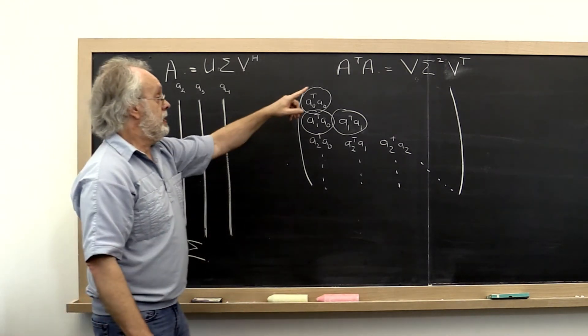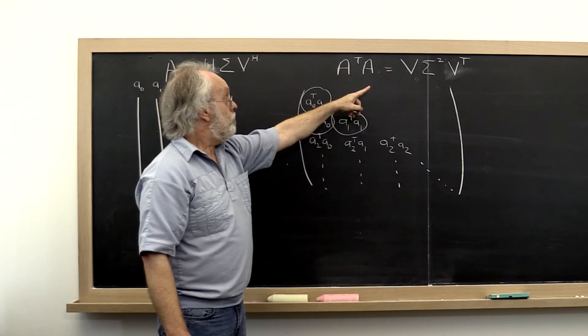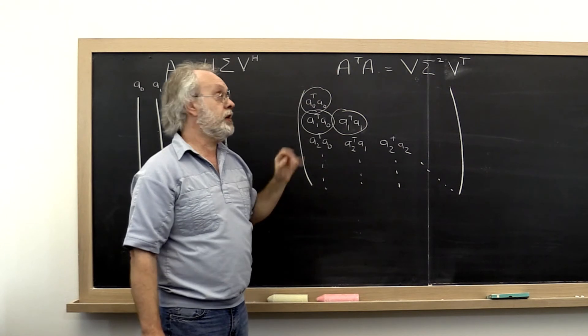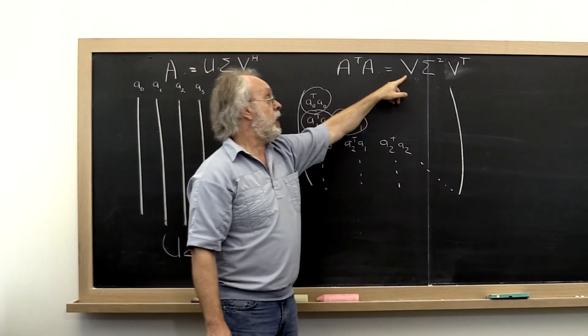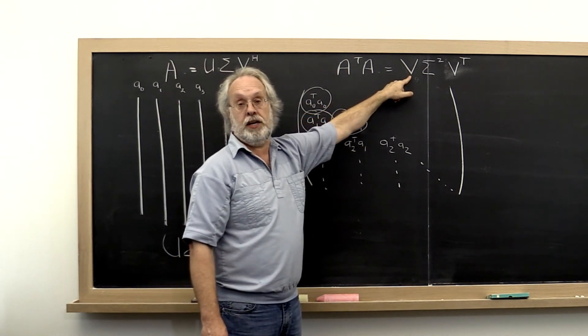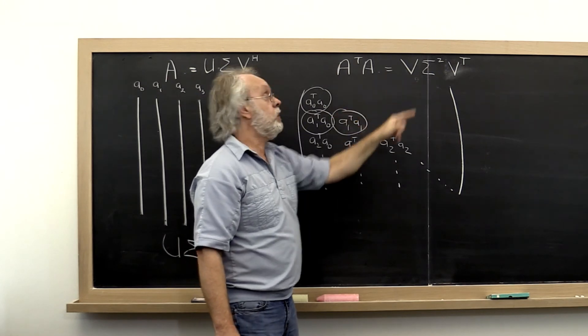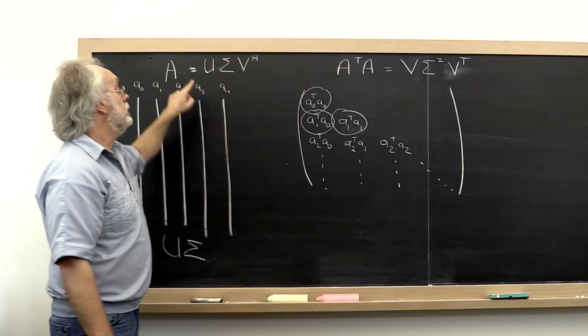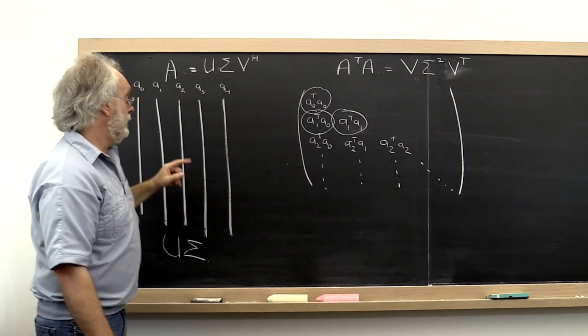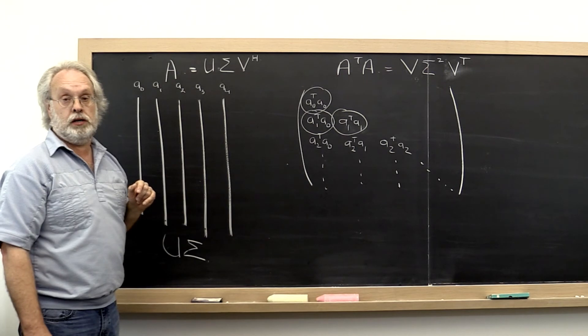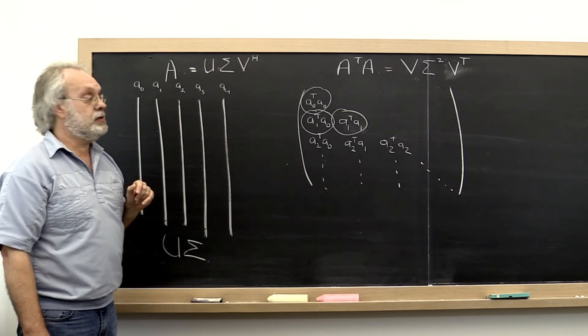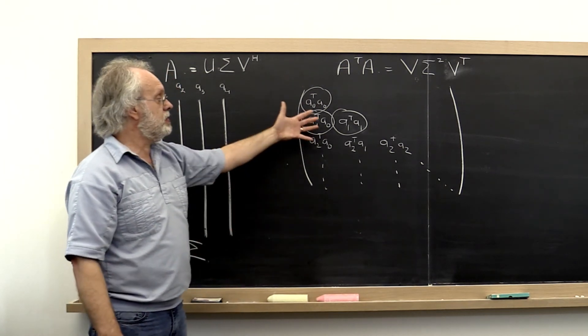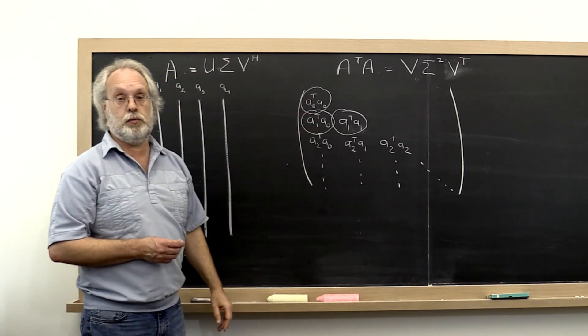And if we accumulate all of the Jacobi rotations that were created that really now represent our matrix V, then we have our singular value decomposition of our matrix A. And this is known as the one-sided Jacobi method. And for that reason, the regular Jacobi method that we already discussed is known as the two-sided Jacobi method.